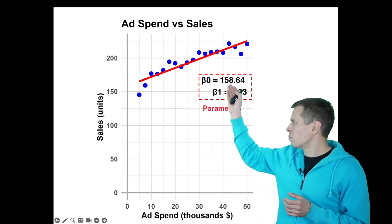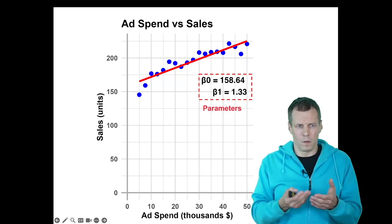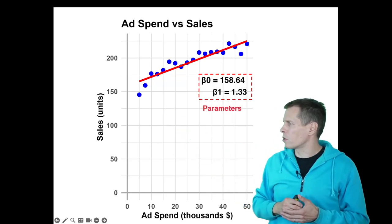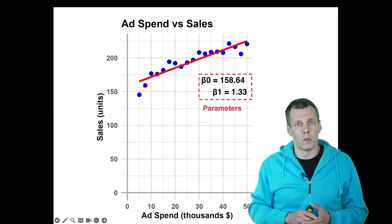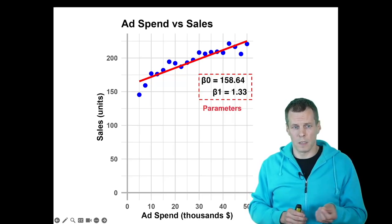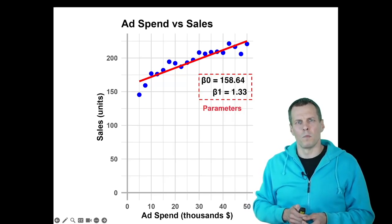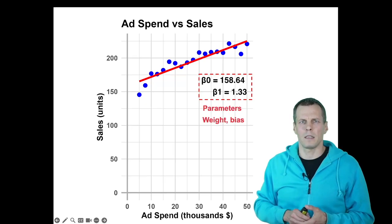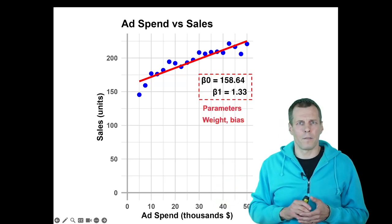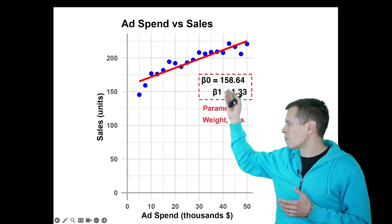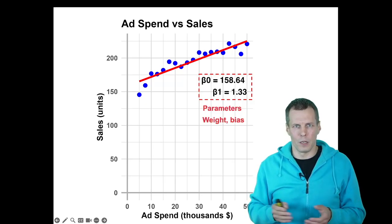We are saying that this beta 0 gives us what is the value of the dependent variable, the predicted variable, the sales when ad spending is zero. And then beta 1 gives us how many units the sales increases for each thousands of dollars spent on advertisement. In machine learning, you might also see that these are called weights and biases. Beta 1 is weight because it tells how much ad spending affects sales. Beta 0 is called the bias because it tells what is the overall level of sales, even if we don't do any advertisement.